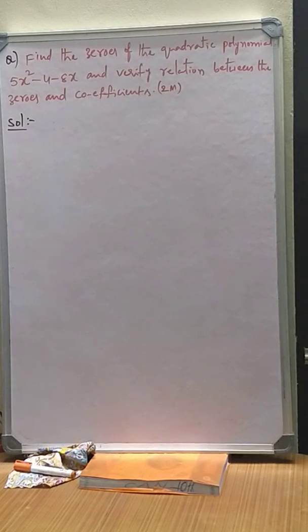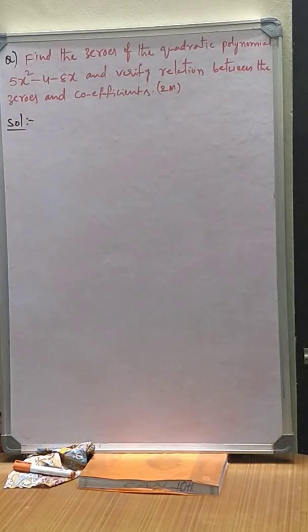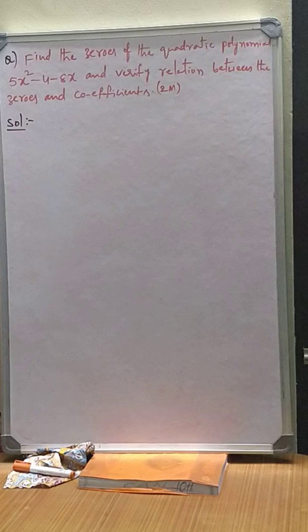Let us take one more important question from the polynomials. Find the zeros of the quadratic polynomial 5x² - 4 - 8x and verify the relation between zeros and coefficients.